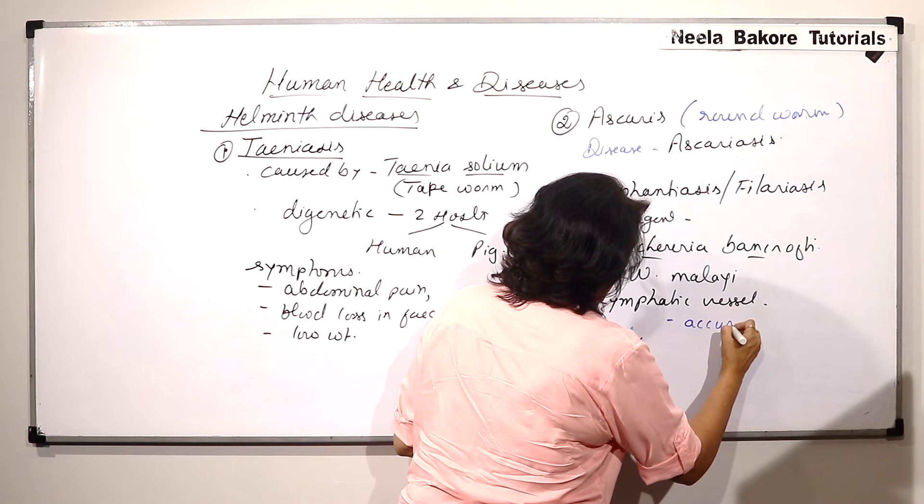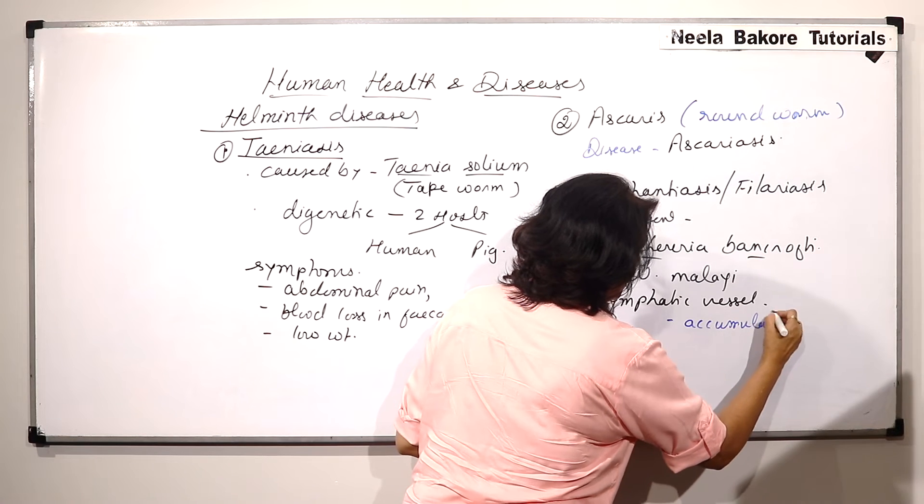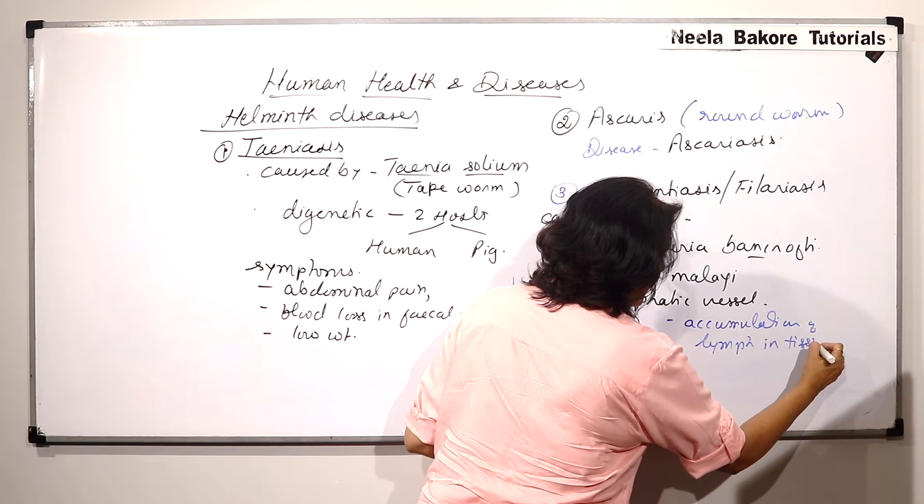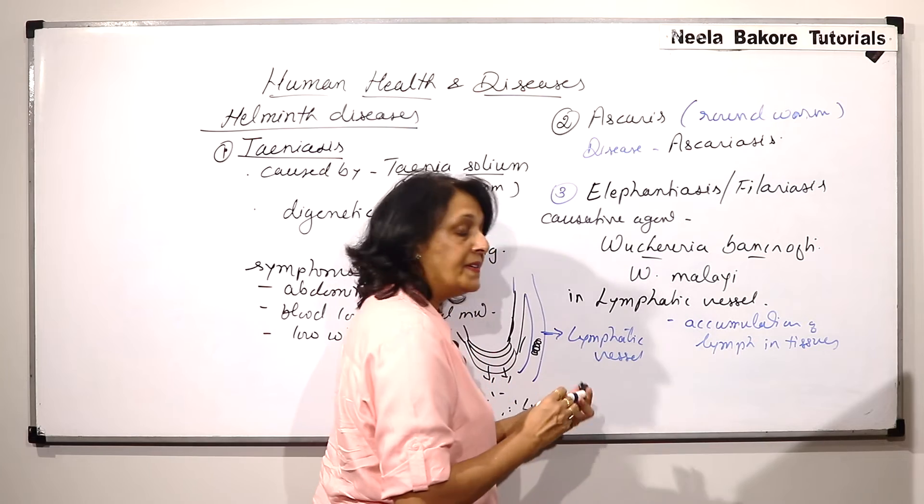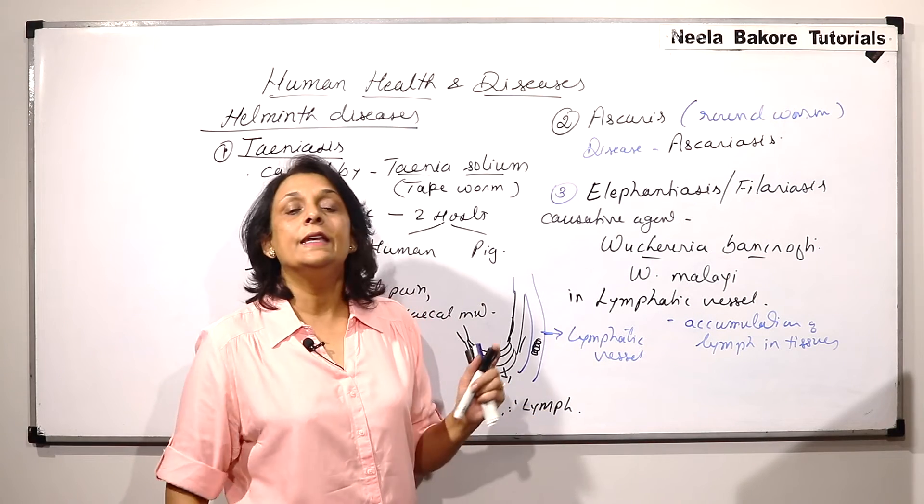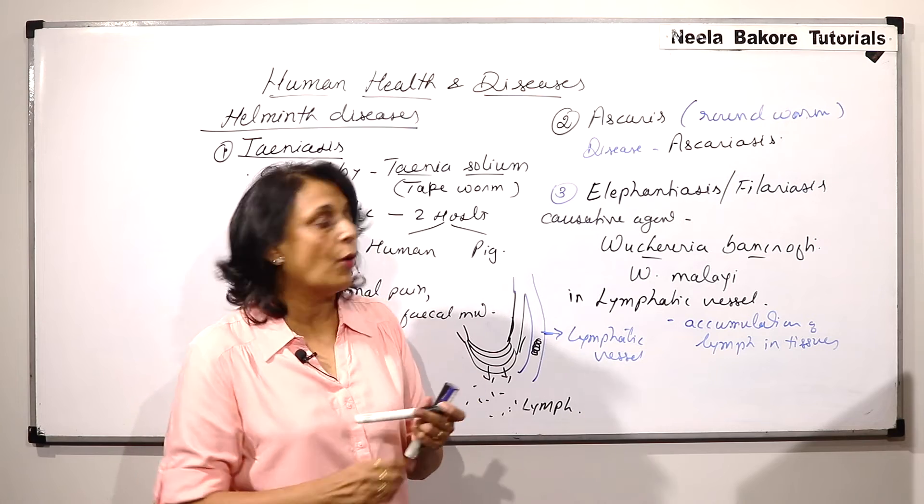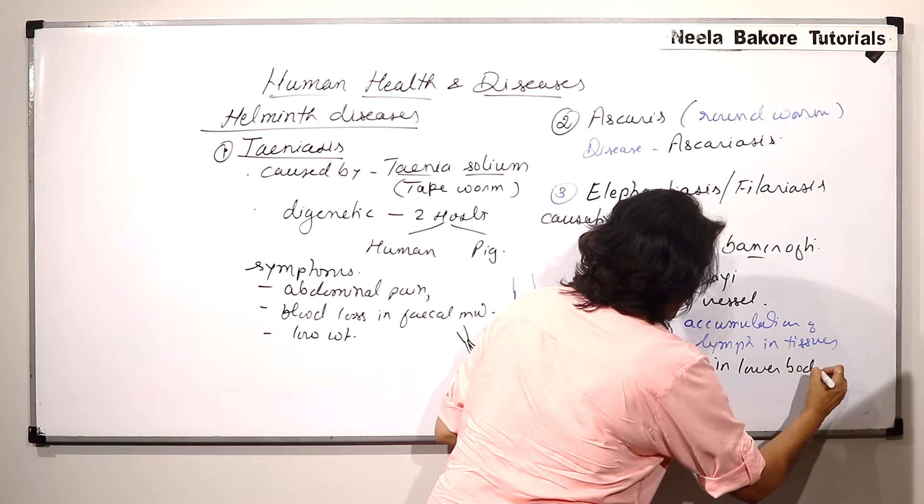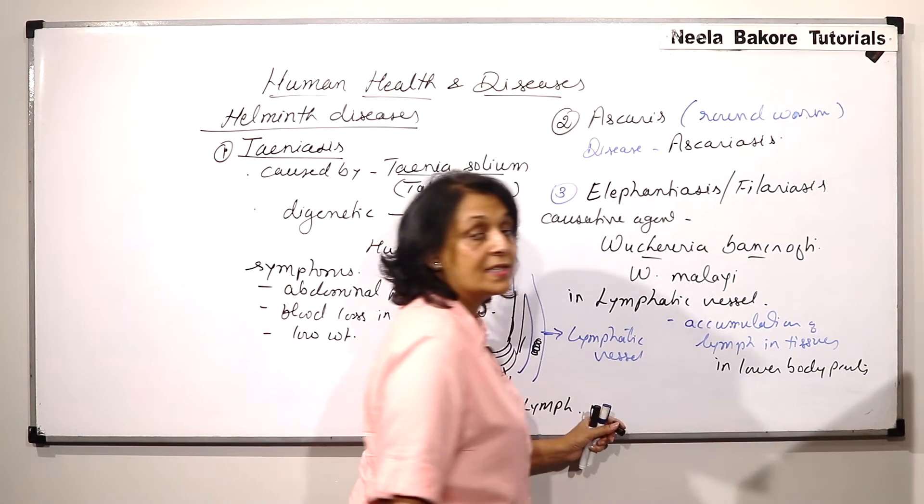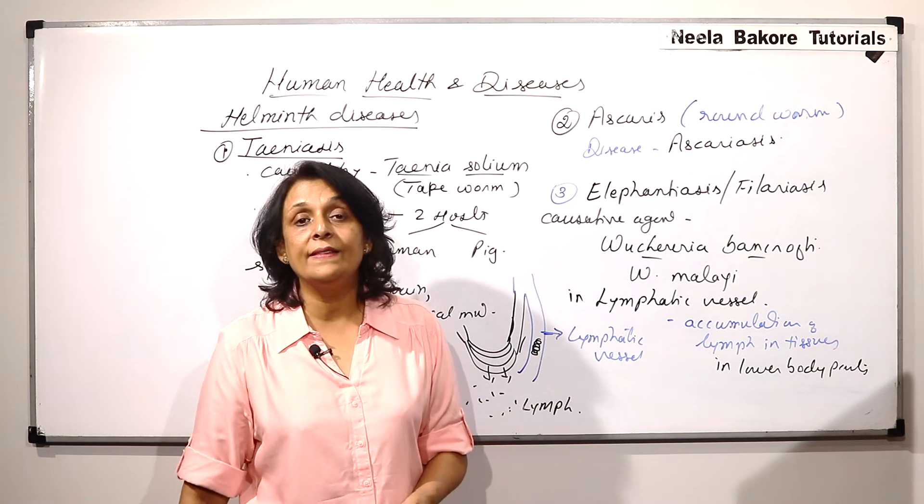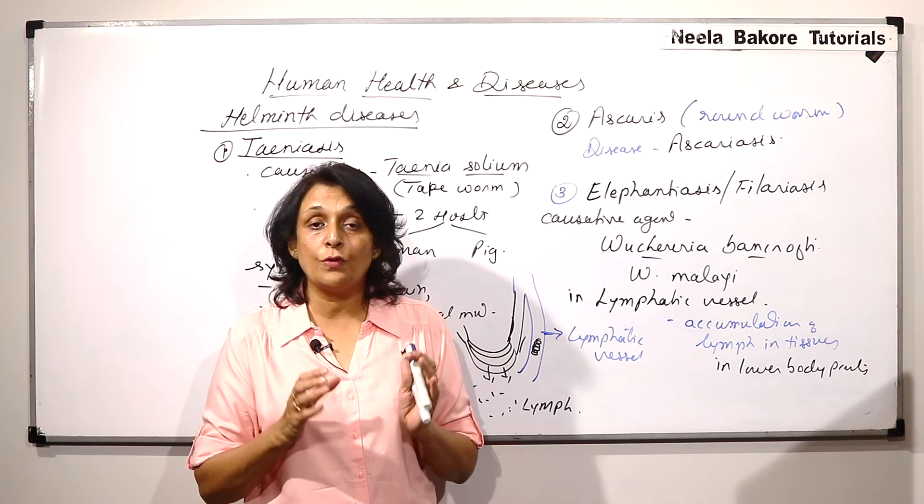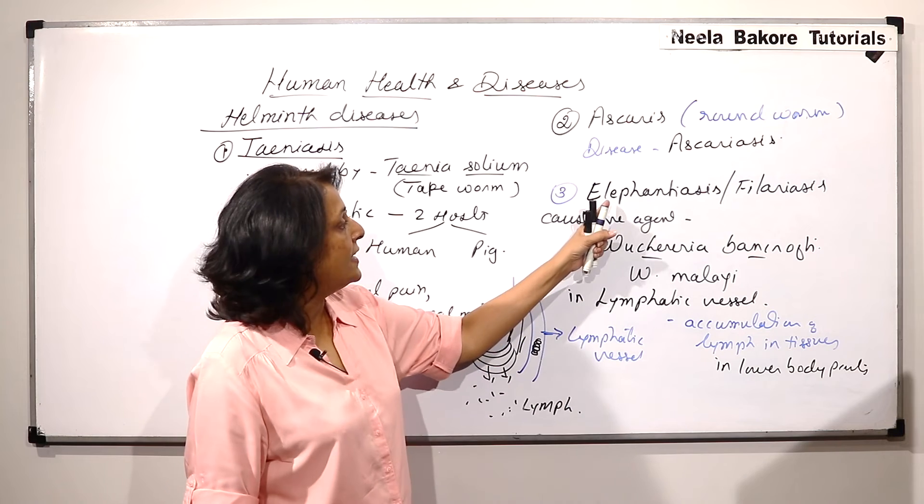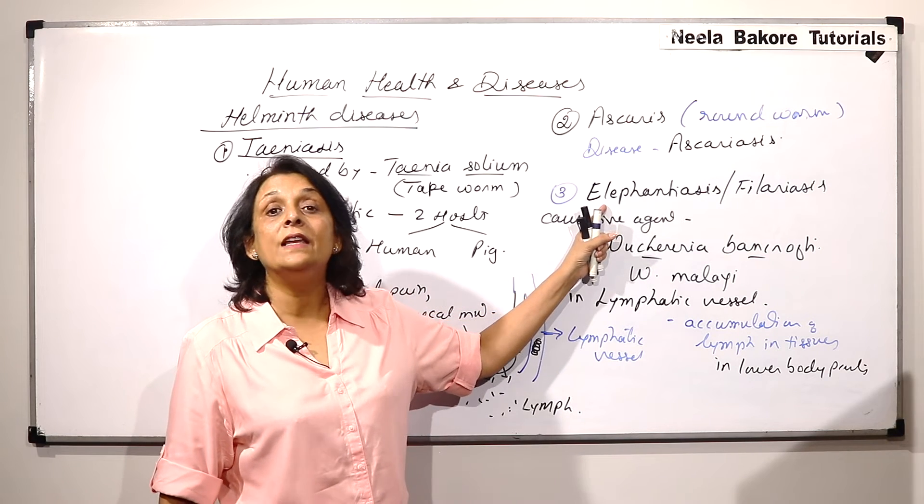So, there is accumulation of lymph in tissues and this results into swelling. Normally, it is in the lower body parts, especially the legs. And if there is swelling in this leg because of accumulation of the fluid, then the leg swells and it becomes like the elephant's leg. And that is why the disease is called elephantiasis.